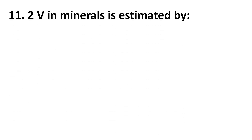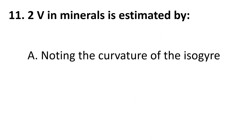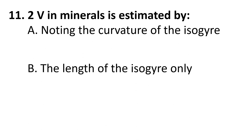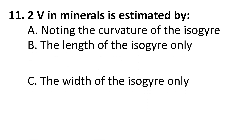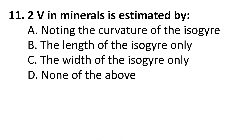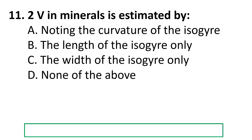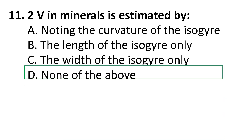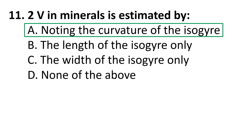Question 11: 2V in minerals is estimated by: A) Noting the curvature of the isogyres, B) The length of the isogyres only, C) The width of the isogyres only, D) None of the above. The correct answer is A) Noting the curvature of the isogyres.